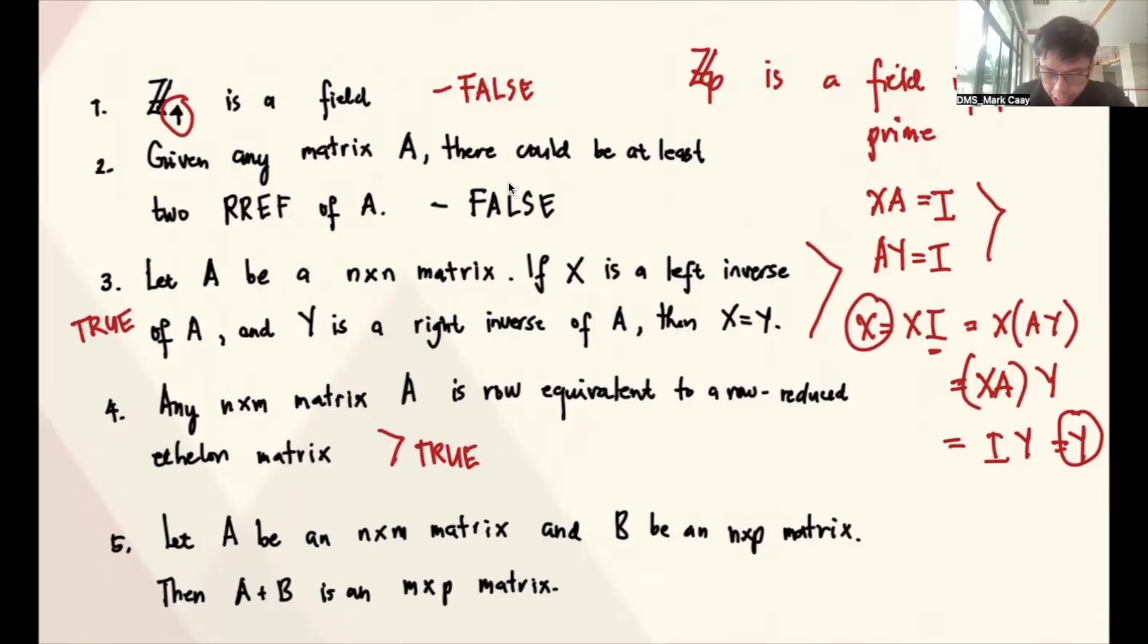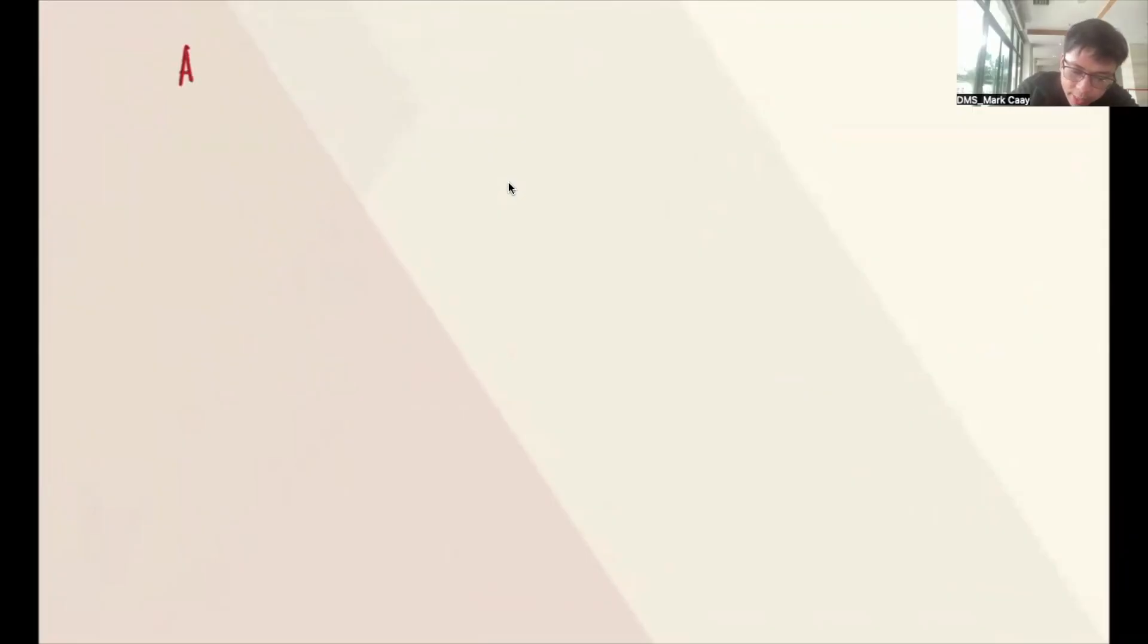Number five: Let A be an N by M matrix, and B be an M by P matrix. Then A plus B is M by P. So A is N by M, B is M by P, and A plus P is supposedly M by P.